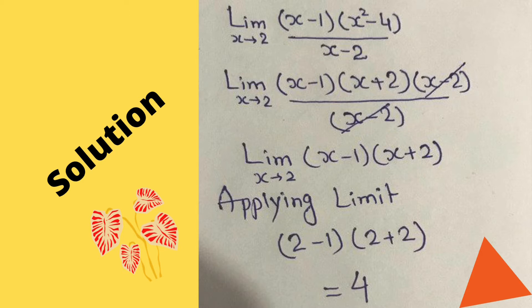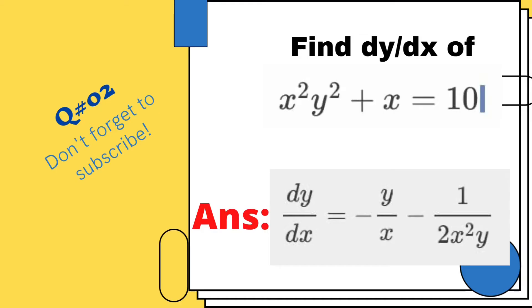2 minus 1 and 2 plus 2, we get the answer 4. Question number 2: Find the derivative of the given expression x²y² + x = 10. The answer is discussed. Now we check its solution.